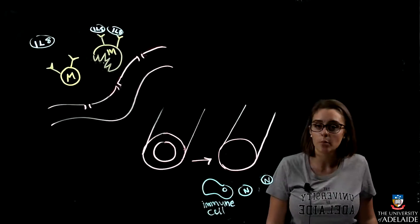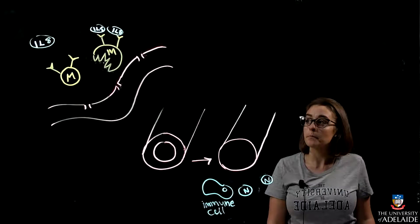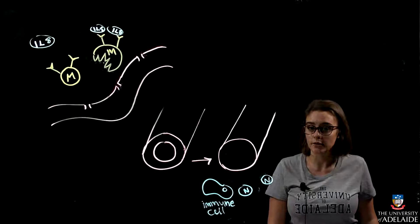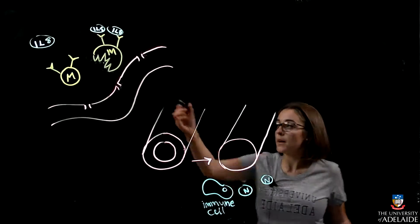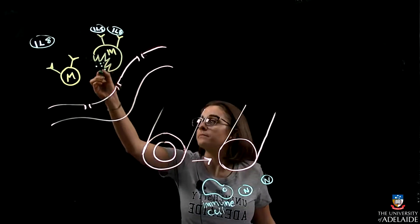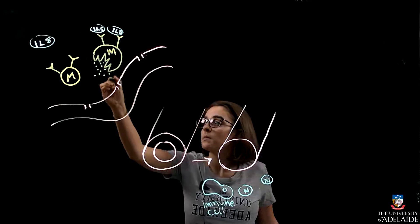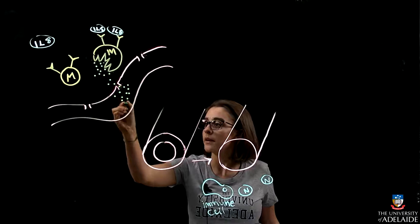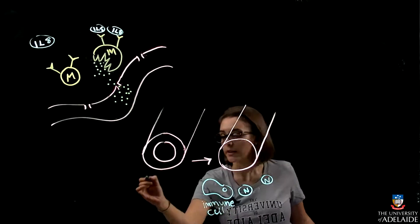At the same time all of this is happening, perivascular mast cells around the junctional epithelium react to the interleukins secreted by the junctional epithelium, break open, and release histamine. These histamine molecules then diffuse into blood vessels around the junctional epithelium and cause vasodilation, which is shown here.